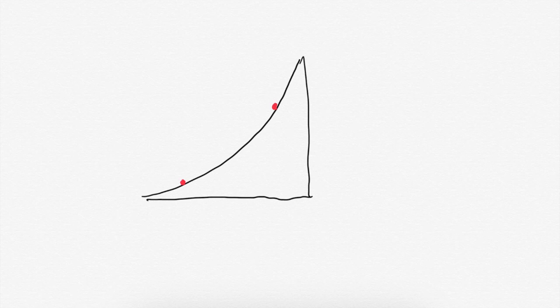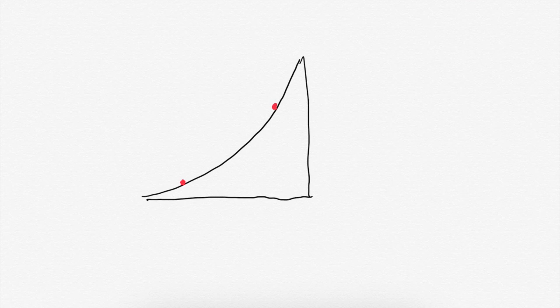Here we've got some sort of a hill, and what we're saying is we've got a ball that's going to roll down the hill. We're asking: is the velocity and the acceleration of the ball going to be greater or smaller at both points on the hill? Does the acceleration increase, does the velocity increase as it rolls down the hill?